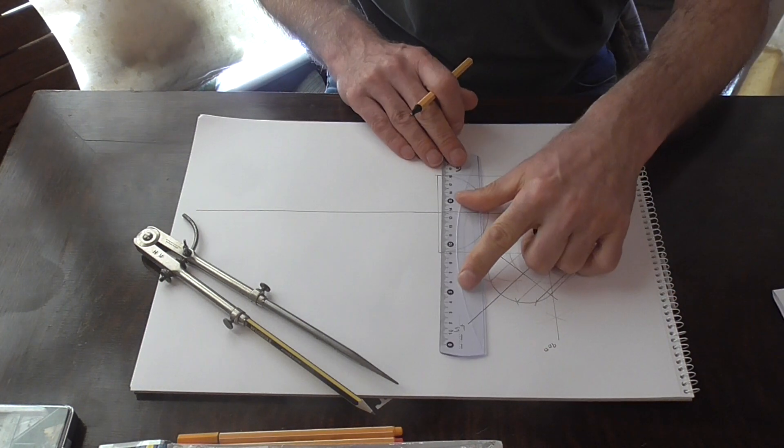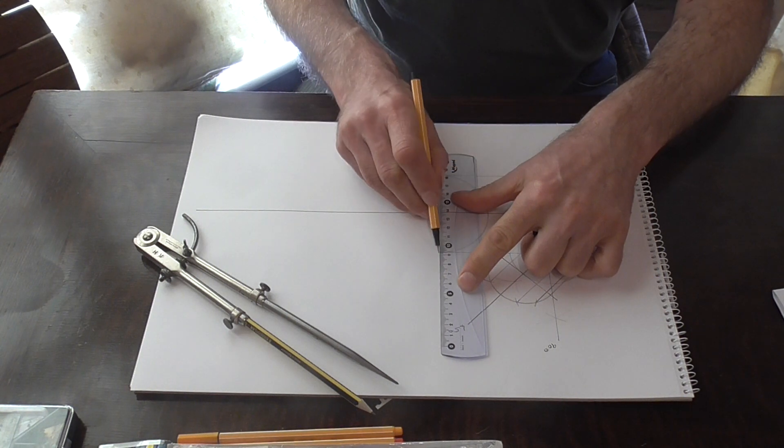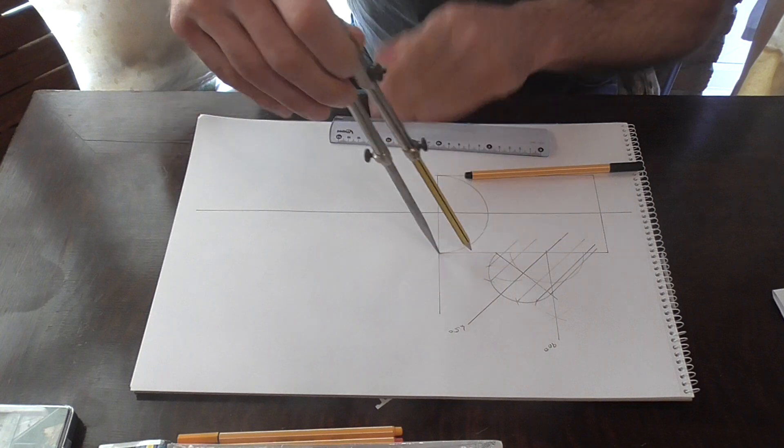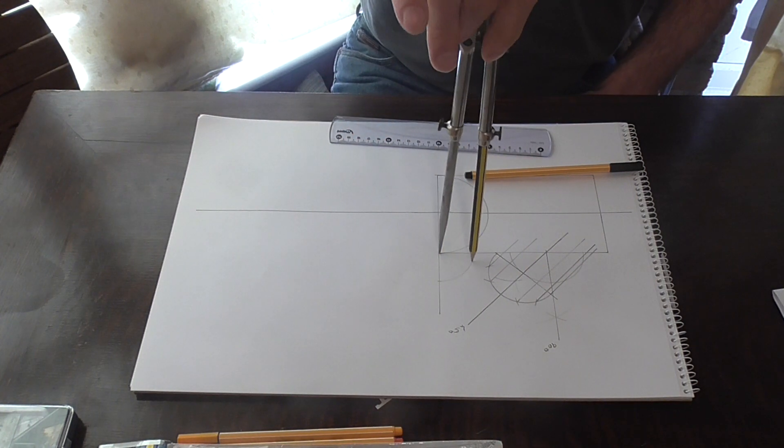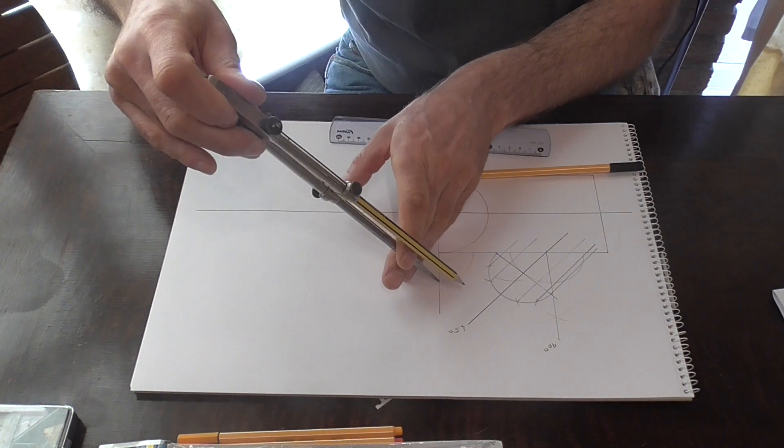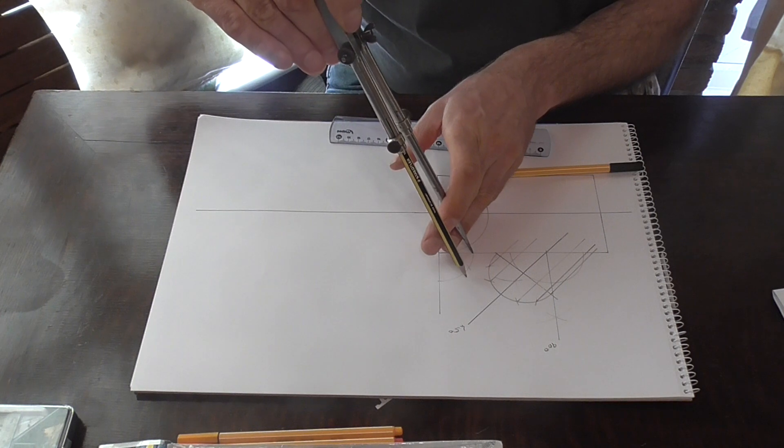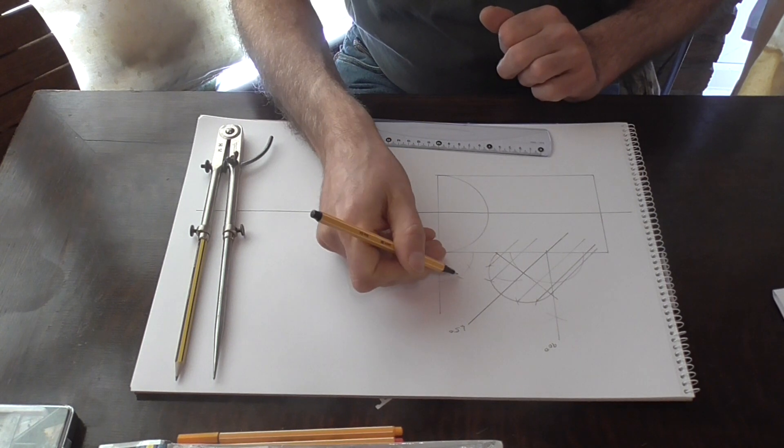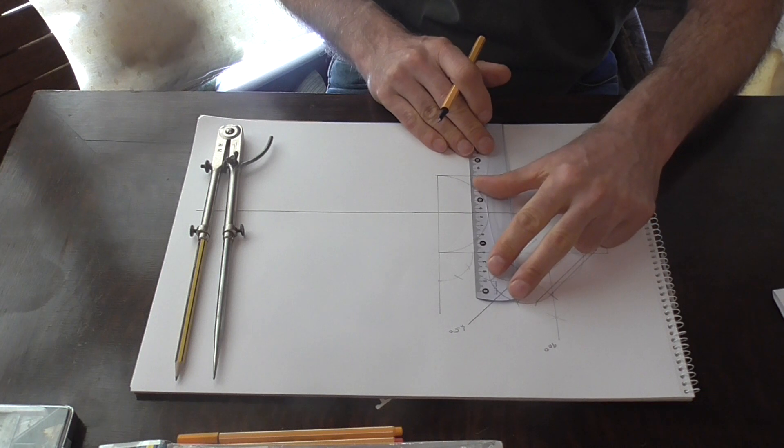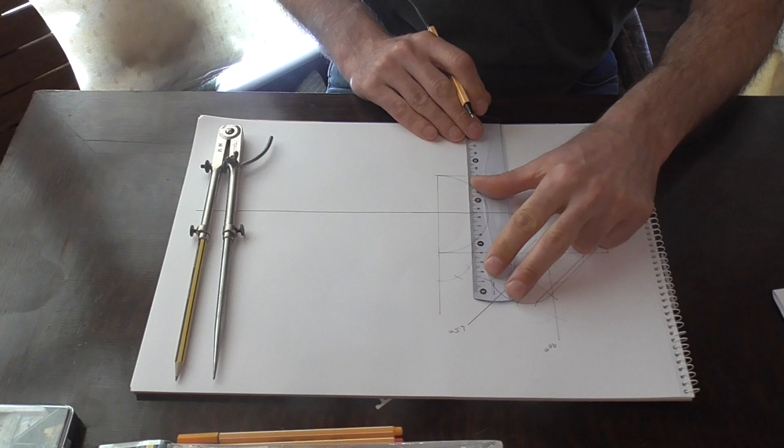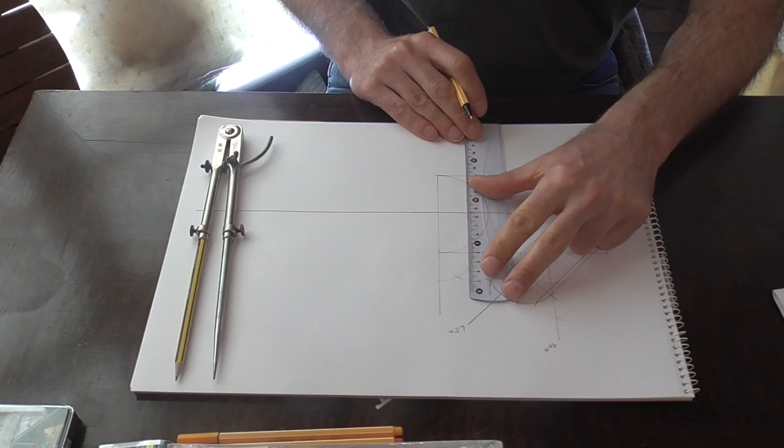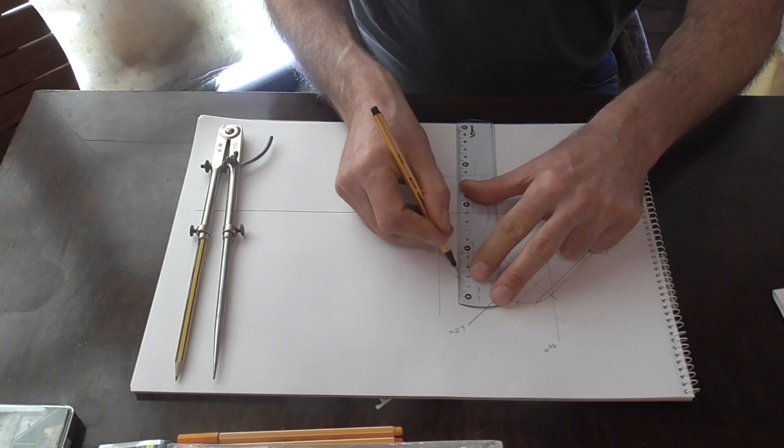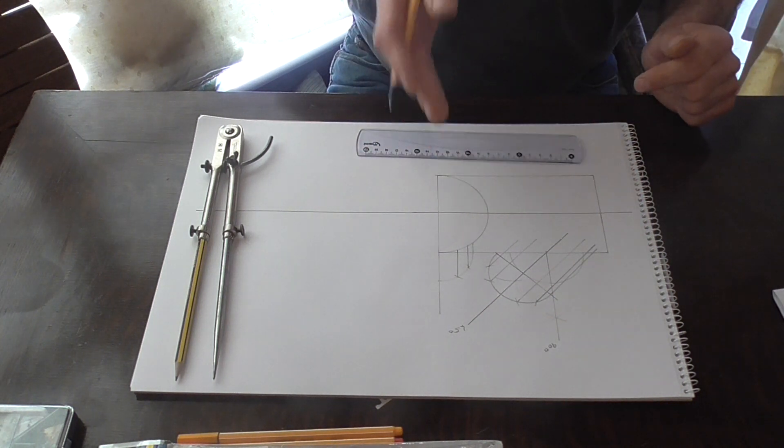Now we need to draw our second view. We'll just extend this line here. Put in an arc just here. Divide that up in the usual manner. Now we need to send these points down to meet our pipe.